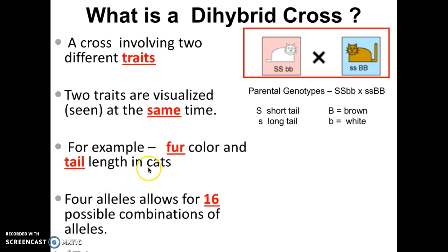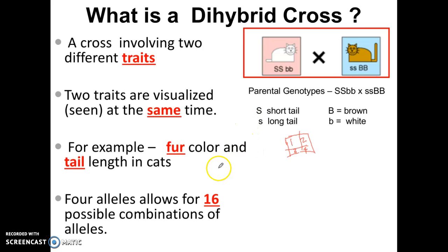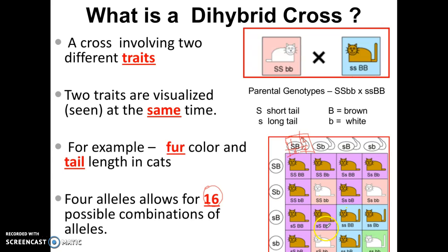This is going to have four different alleles, and those alleles will allow for 16 possible combinations. So far we have been talking about two alleles, and those two alleles allow for four possible combinations — which is why we have used the four boxes. However, now since we're going to be talking about four different alleles, that's going to allow for 16 possible combinations, which means we're going to be using 16 squares.